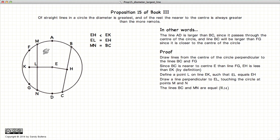From Proposition 14 of Book 3, because EL is equal to EH, MN is equal to BC.